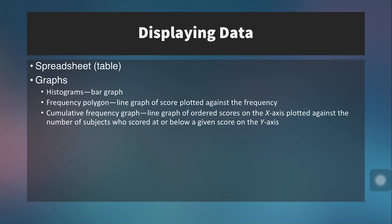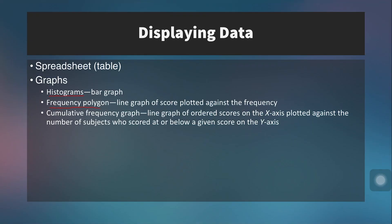We can also display data using graphs. The first type is called a histogram — a bar graph that shows the frequency of each score or group of scores. A frequency polygon shows the same information but allows you to calculate the area under the curve. And then we have a cumulative frequency graph, which is a line graph of ordered scores on the x-axis plotted against the number of subjects who scored at or below that score on the y-axis.